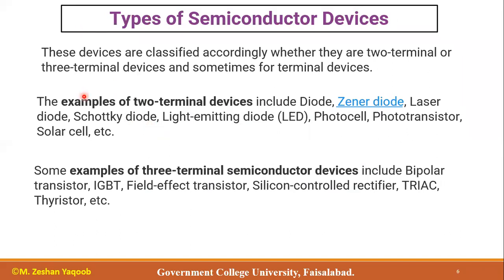We can divide semiconductor devices into two categories: two-terminal and three-terminal devices (and sometimes four-terminal devices). For our course, the two-terminal devices include the diode, Zener diode, laser diode, Schottky diode, LED (light emitting diode), photocell, phototransistor, and solar cell. For the three-terminal devices, we have the bipolar junction transistor (BJT), field effect transistor (FET), and the silicon-controlled rectifier (SCR), triacs, and similar devices.